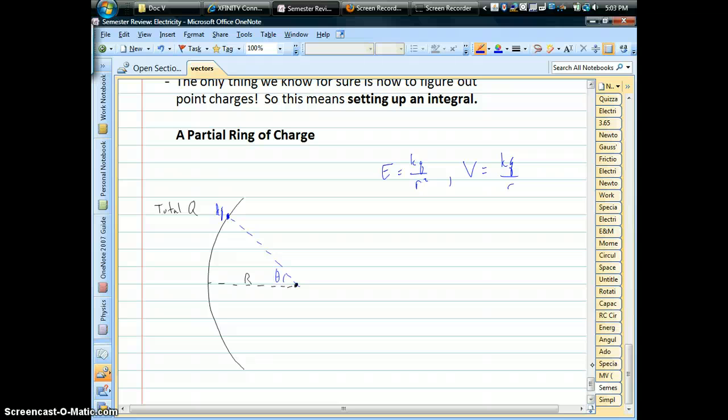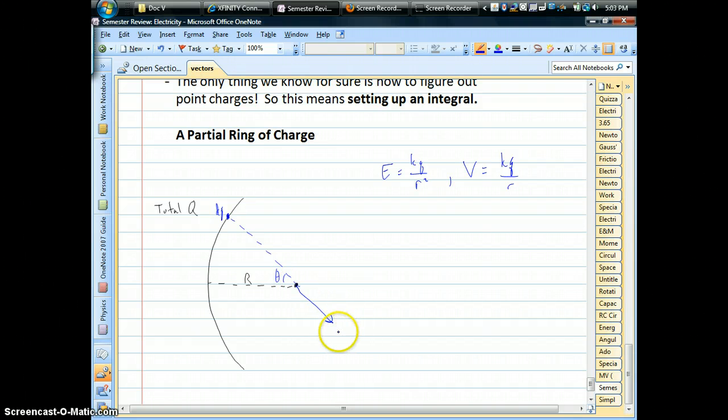And if you think about this thing, we can break it into a bunch of little pieces, all these little DQs. And each little charge is shooting out its own little electric field, which, being radial, will come along this radius line and point in a direction something like that.